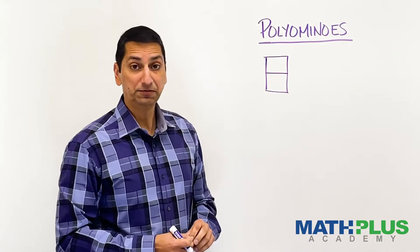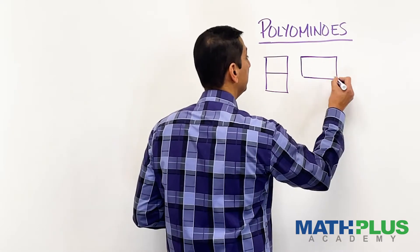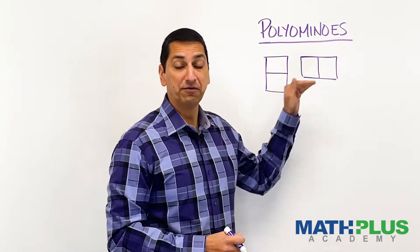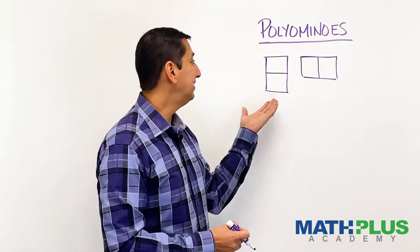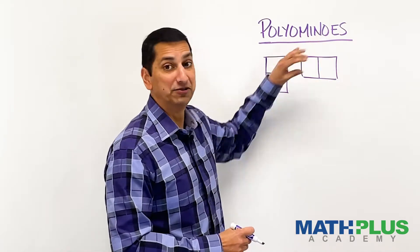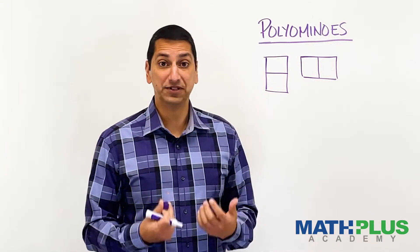So that's a domino, and you could draw another one that looks like this, right? So this one's kind of vertical and that one's horizontal. But really, if we had physical dominoes, you could easily take this one and rotate it, and they're really the same. So there's really only one kind of domino.